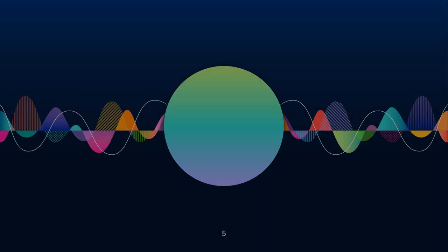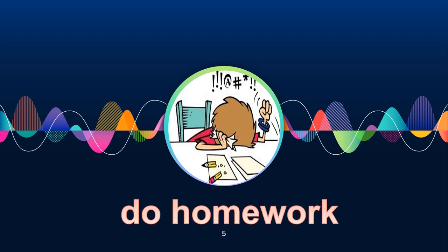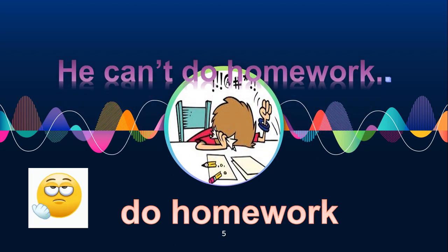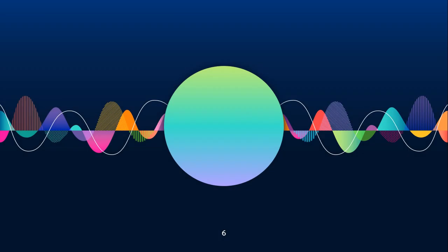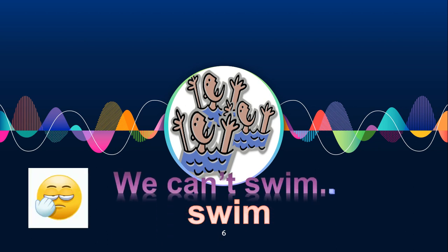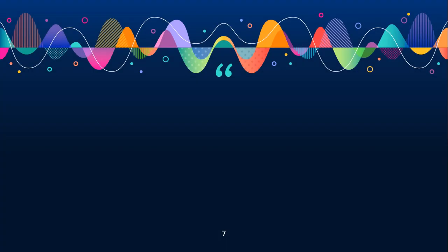Now look at this picture. What is the boy doing? He is supposed to do homework, but he cannot do the homework. So what will be the sentence? He can't do homework. Next, they are supposed to be swimming, they should be swimming, but they cannot swim. So the sentence will be: we can't swim, or you can say they can't swim. That's how we use can or can't.